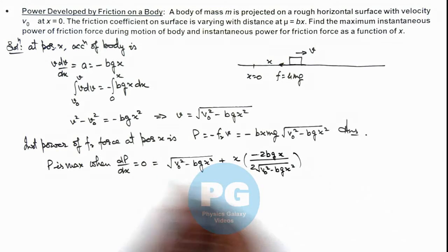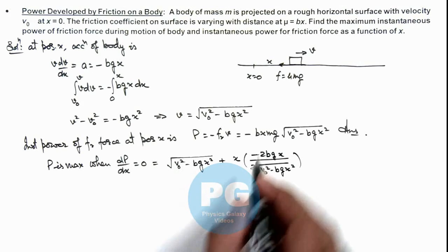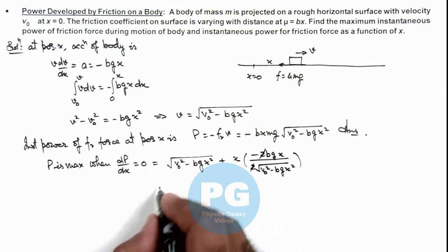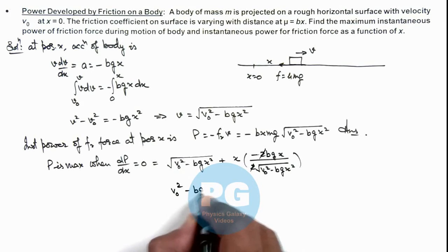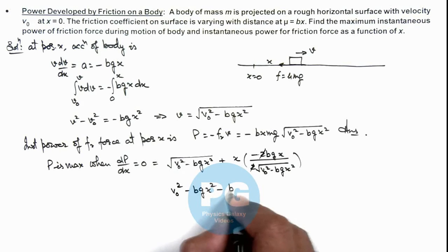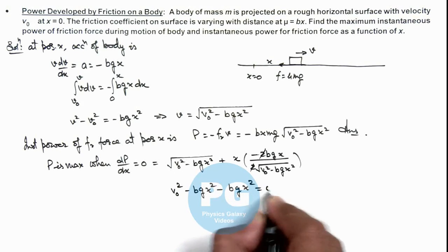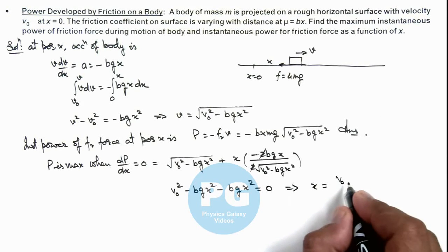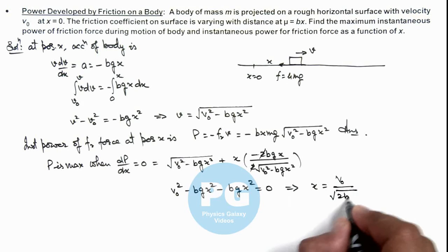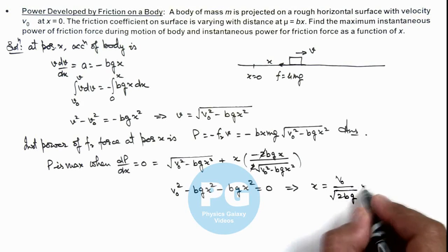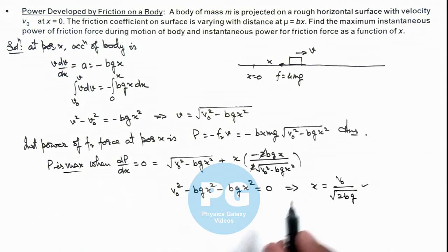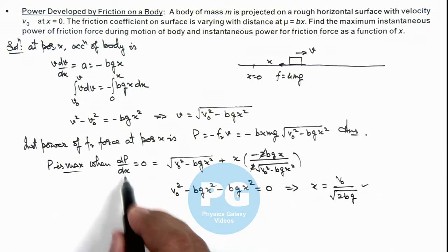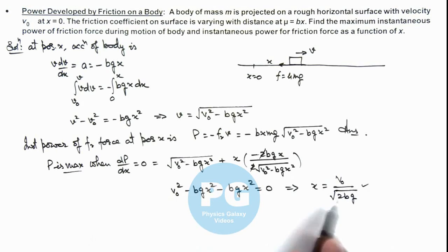Equating to zero and simplifying by cross multiplication, the 2 cancels out, giving us v₀² minus bgx² minus bgx² equals zero, which simplifies to v₀² minus 2bgx² equals zero. Solving for x, we get x equals v₀ divided by the square root of 2bg. This is the value of x at which power is maximum. Verifying via the second derivative d²P/dx² at this x confirms it is indeed a maximum.